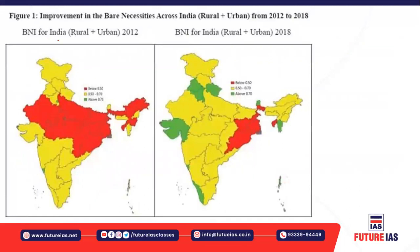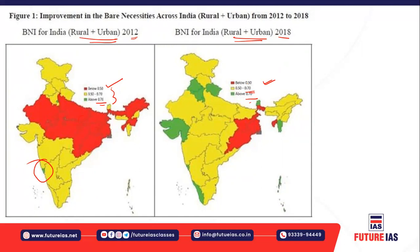The bare necessity index — constructed in 2012 and again in 2018 for rural and urban — is scored where below 0.50 is shown in red, 0.50 to 0.70 is yellow, and above 0.70 is green. Comparing 2012 to 2018, the below-0.50 category has declined, the 0.50-to-0.70 category has increased, and the above-0.70 category has also increased in certain pockets, based on NSO national sample survey organization data.